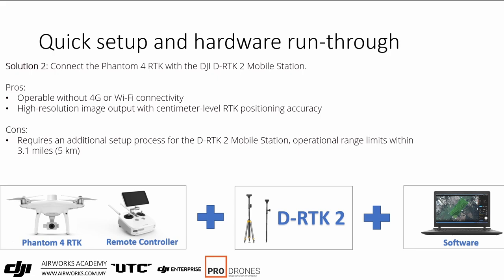The second solution is to connect the Phantom 4 RTK and remote to the DRTK2 base station. This works anywhere as long as you are within about two kilometers line-of-sight to the DRTK2 — you get RTK position data immediately. The limitation is that you need to measure the known point where you place the DRTK2; otherwise your images will be relatively accurate to each other but off in absolute positioning.